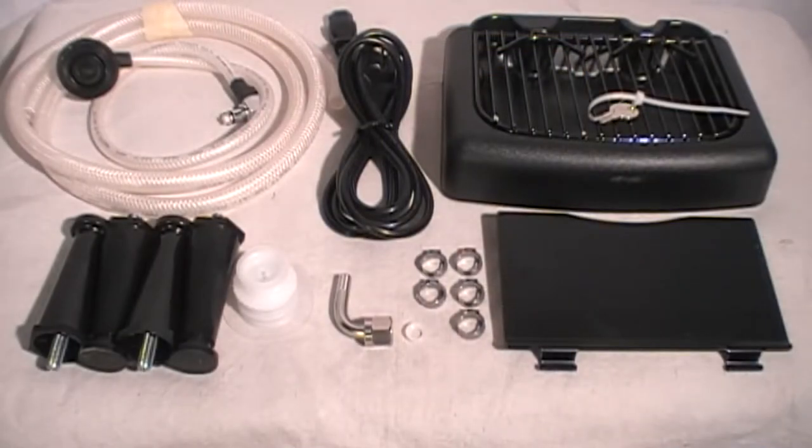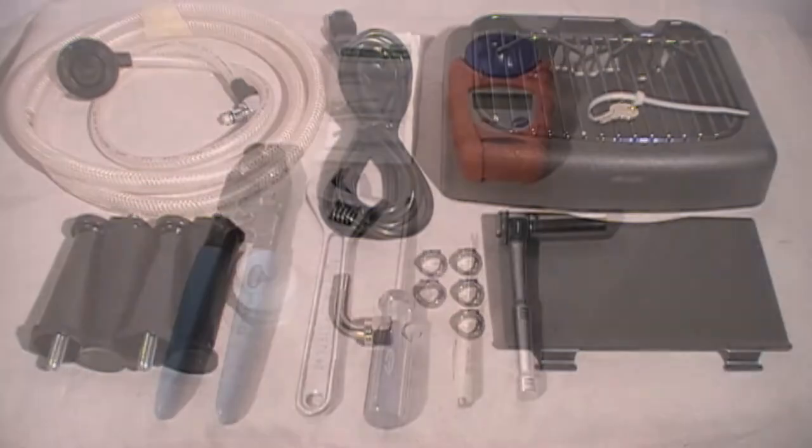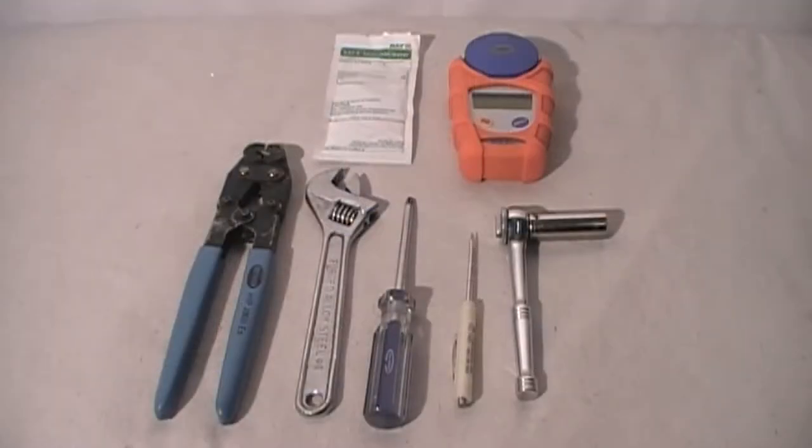Before setting up the Nitro Pro Mini dispenser, make sure to have the necessary tools shown: a Phillips and straight tip screwdriver, adjustable wrench, 9-16th socket wrench, and a clamp crimping tool.